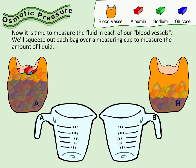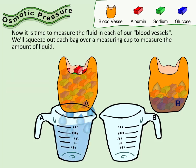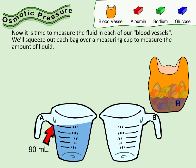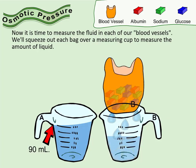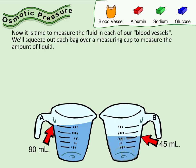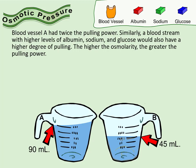Now it is time to measure the fluid in each of our blood vessels. We'll squeeze out each bag over a measuring cup to measure the amount of liquid. Blood vessel A had twice the pulling power. Similarly, a bloodstream with higher levels of albumin, sodium, and glucose would also have a higher degree of pulling. The higher the osmolarity, the greater the pulling power.